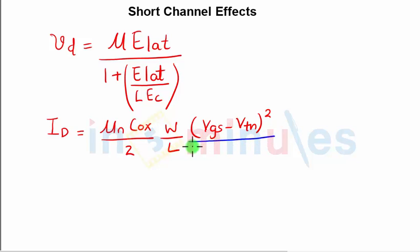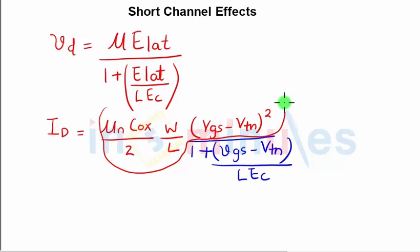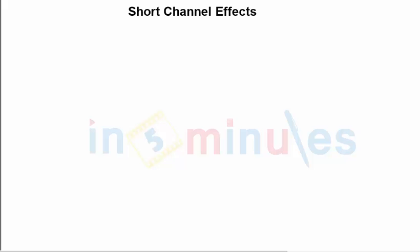The equation also has a term: 1 + (Vgs - Vtn) / (L × E_critical) in the denominator. The only thing added here is that the (Vgs - Vtn)^2 term is divided by this factor, where (Vgs - Vtn) itself is divided by the length of the channel times E-critical. Let's understand what's happening because of this.